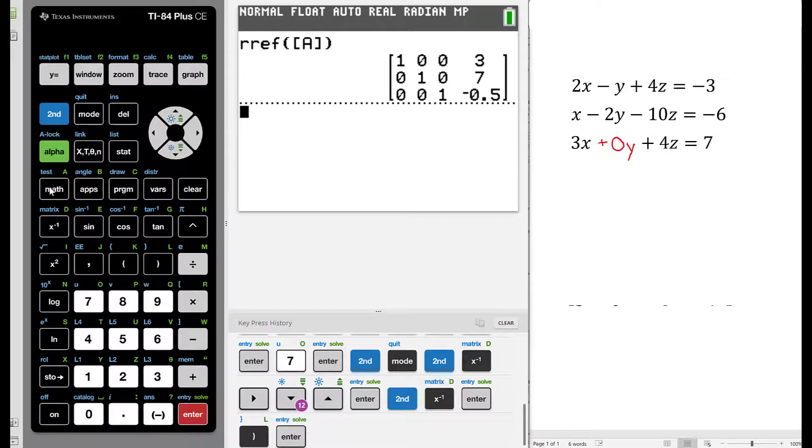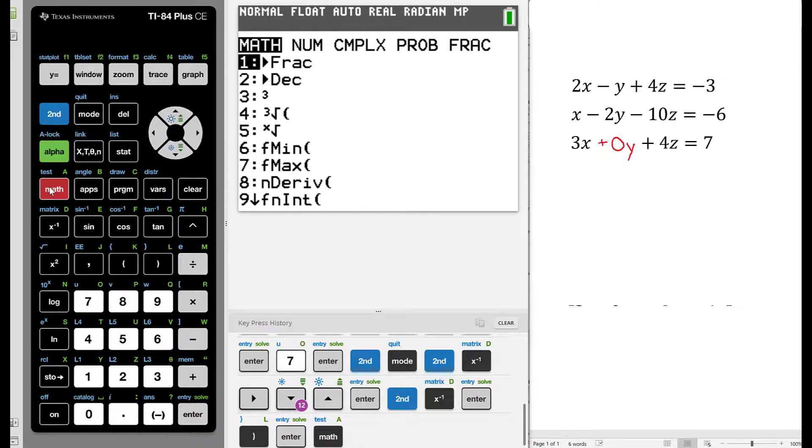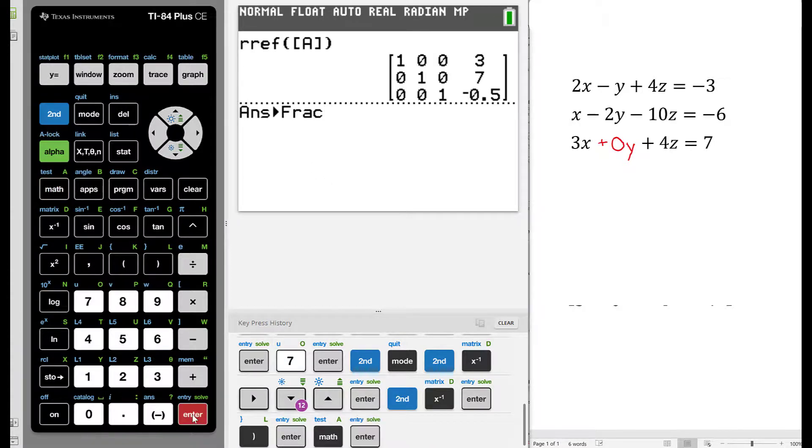If I wanted to convert any decimal solutions to fractions, I could press the button that says math and then press enter on number 1. And this would say answer to fraction. Press enter and it would provide me with my Reduced Row Echelon Form of my matrix with fractional solutions.